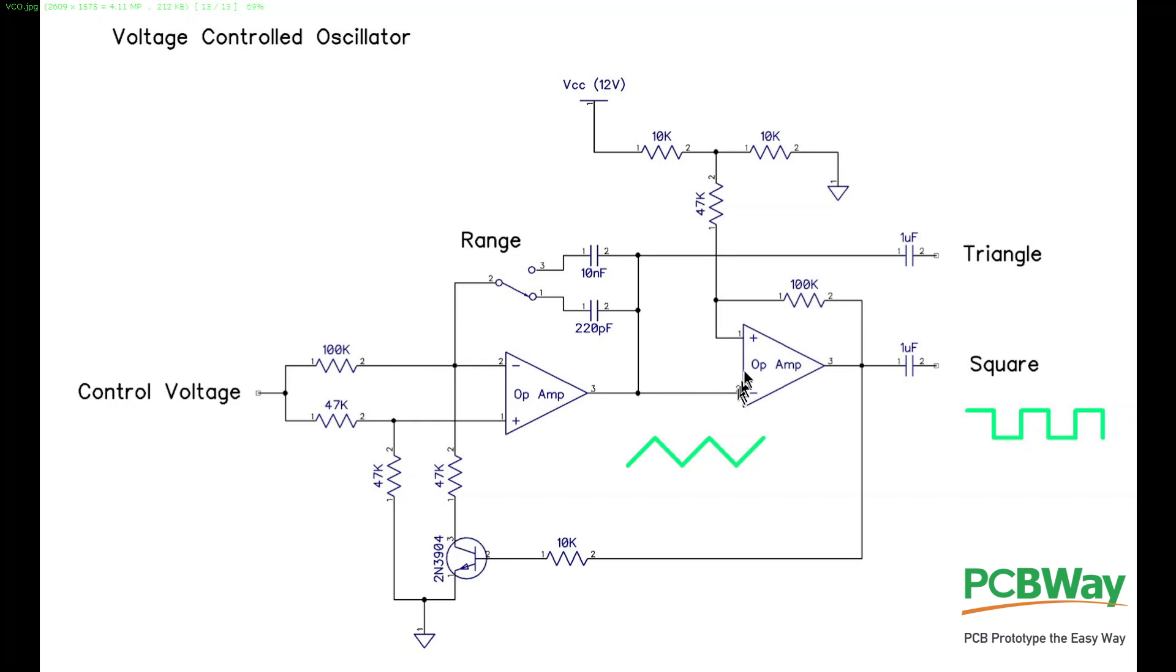Now once this voltage gets above this voltage here, this op amp will go low. And when it goes low it turns this transistor off so that this point here goes to the control voltage, which is above one half the control voltage, causing this amplifier here to now go low down to ground. It's going to cause this capacitor to discharge and the voltage drops down.